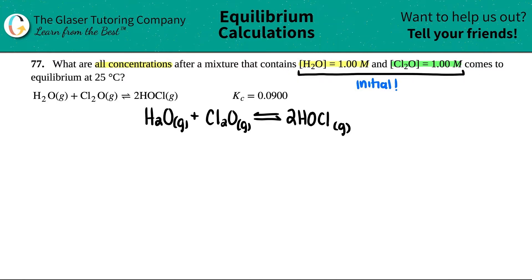Once they give me initial or starting values, we have to use an ICE table. I just write out I-C-E to get your thoughts organized and get your equilibrium numbers. Some professors call it a RICE table - the R stands for reaction - but I just like to use ICE. Less letters, the better.